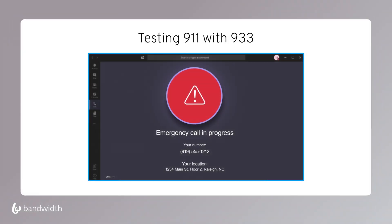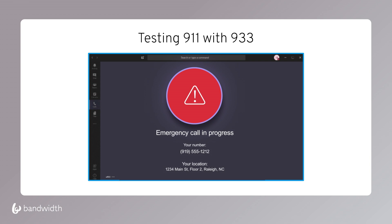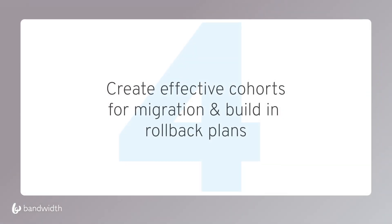We don't want to call 9-1-1 repeatedly and overload PSAPs for every user, so Bandwidth has a 933 testing service. In the Teams tenant, simply add 933 as a dial string to your call routing policy. When you dial 933, Teams treats it as a 9-1-1 call. You'll see a big red 'emergency call in progress' notification, the user's phone number, the civic address, and critically, the dispatchable location — such as 'floor two' — that first responders will need.